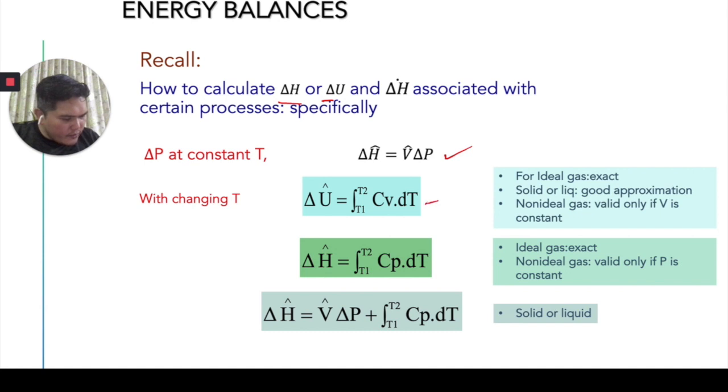...then we can use this particular formula for changing pressure at constant temperature. And with changing temperature, we can use either this formula which is this is for calculation of internal energy changes and this is for the calculation for specific enthalpy changes. So, for solid or liquid, then we can simply just use this particular equation. We can use the VΔP plus the integral change from T1 to T2 Cp dT.